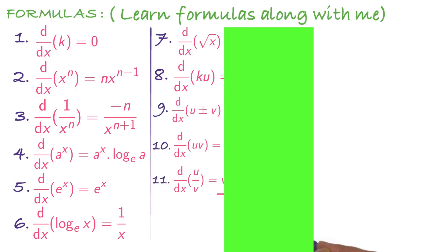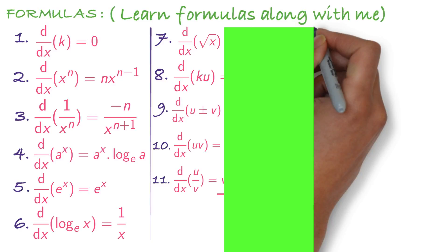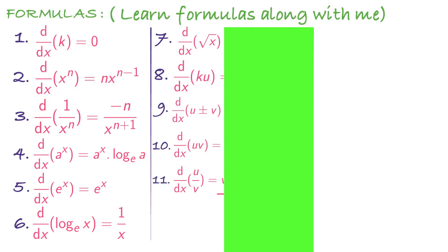What is derivative of root x? It is 1 divided by 2 root x. Eighth and ninth formulas are very easy. d by dx of ku is k into d by dx of u. Ninth formula, d by dx of u plus v is derivative of u plus derivative of v. Tenth formula, the product rule: u into derivative of v plus v into derivative of u. Last formula, the quotient rule — d by dx of u by v: it starts with v — v into derivative of u minus u into derivative of v, whole divided by v square.